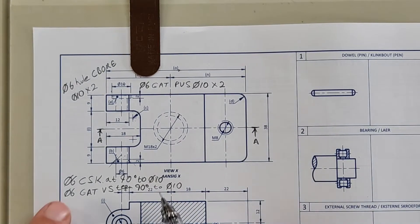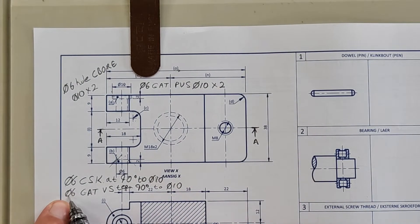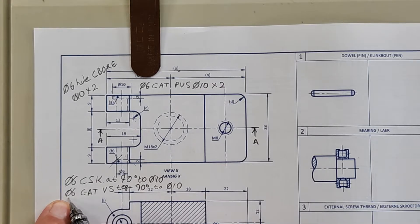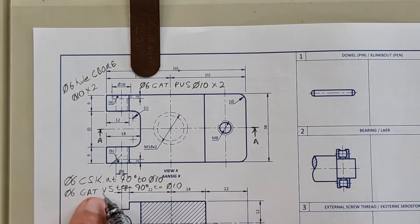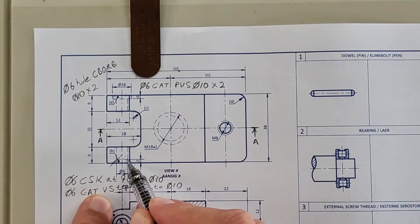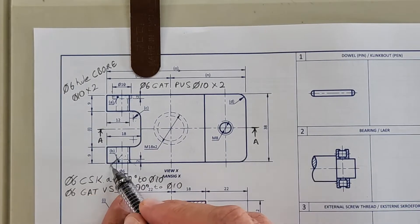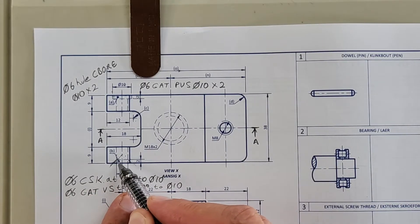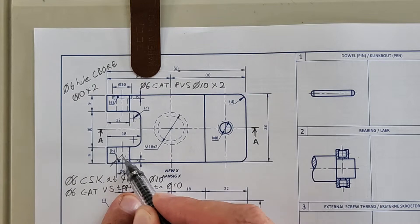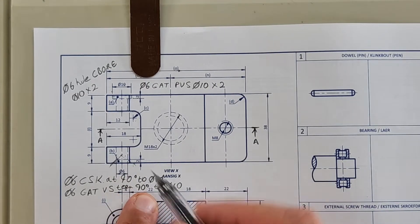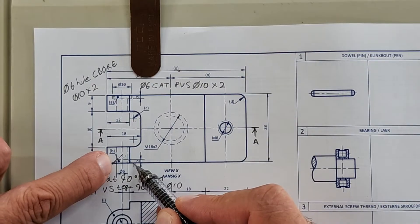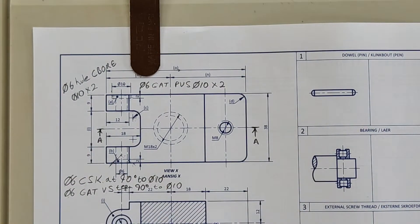Afrikaans: diameter 6 gat, versinkt teen 90 grade tot diameter 10. Take a moment, take a deep breath and study that, why I'm saying that so that you can remember: diameter 6 is the gat, versinte gat is the fact that it is at a grade, it is 90 grade, and I'm reading the two together to diameter 10, which is the diameter 10. Take a moment to make that your own.